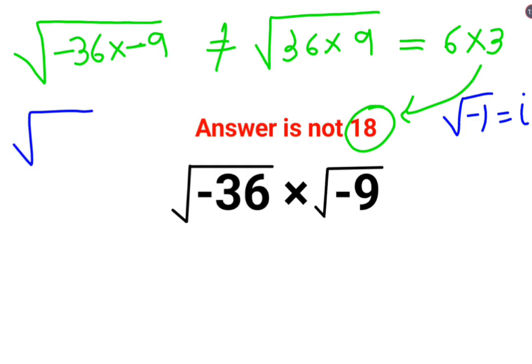So your root minus 36 can be written as what? 6 multiplied by root of minus 1, 36 multiplied by root of minus 1. So root of 36 can be written as 6, and root of minus 1 we know it is taken as i.